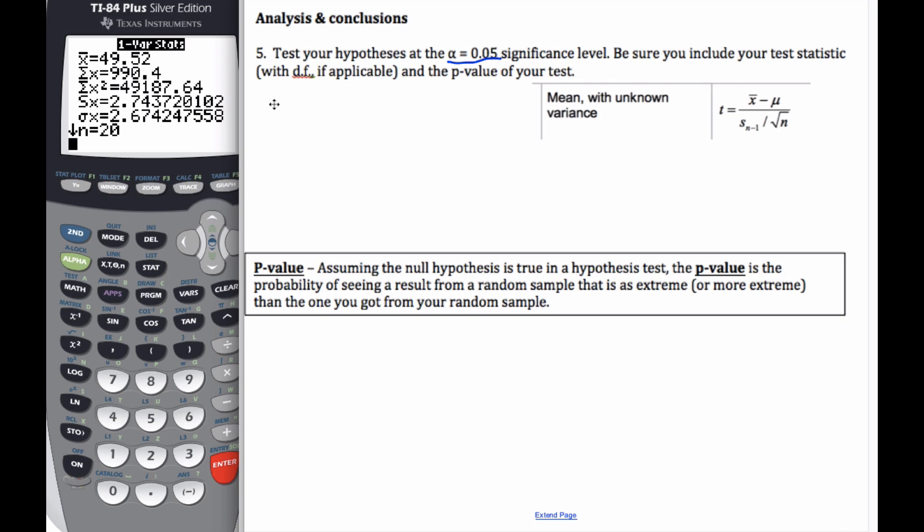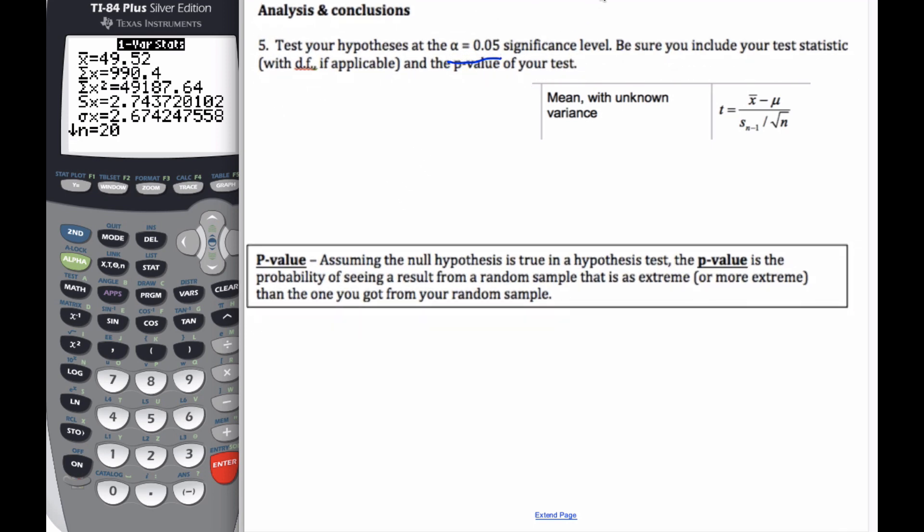So our test statistic is going to be, if we do our computations, we're going to be T is equal to X bar, which I know is 49.52, 49.52 minus 50 over the standard deviation is 2.74 divided by the square root of 20. Now, I've only written three decimal places here, but when I do this calculation, I'll use all of them. And when I do that calculation, I get T is equal to negative 0.7824. This is our test statistic, T.